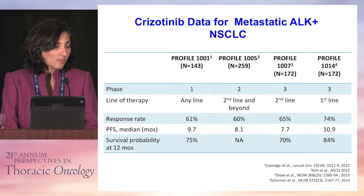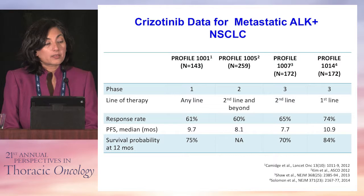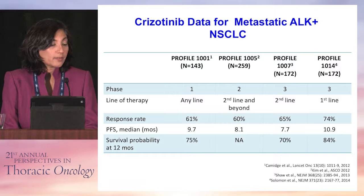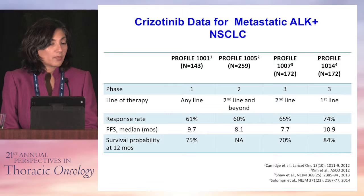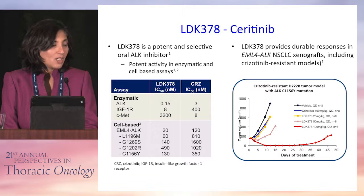This gives an overview of the phase 1 data as well as the first-line and second-line data. Response rates in general are fairly consistent at about 60%. For the treatment-naive population in PROFILE 1014, the response rate was a little bit higher at 74%, and the PFS was 10.9 months. In general, under a year, median patients tend to have progression. The 12-month survival probability in PROFILE 1014 was as high as 84%.